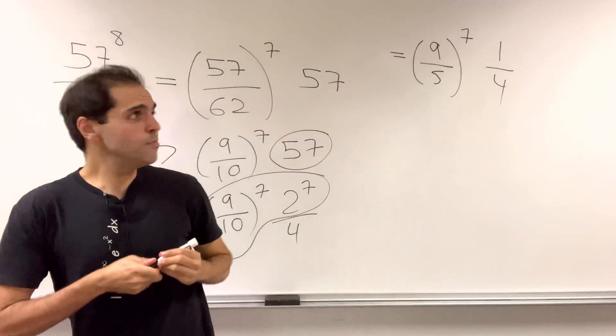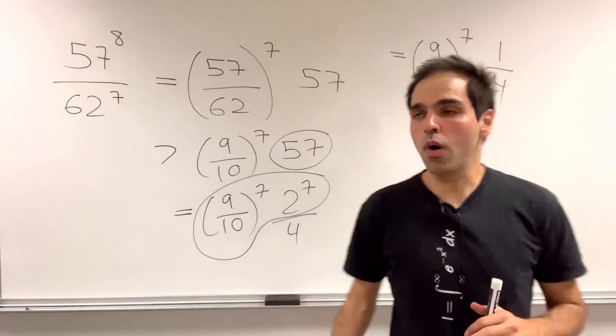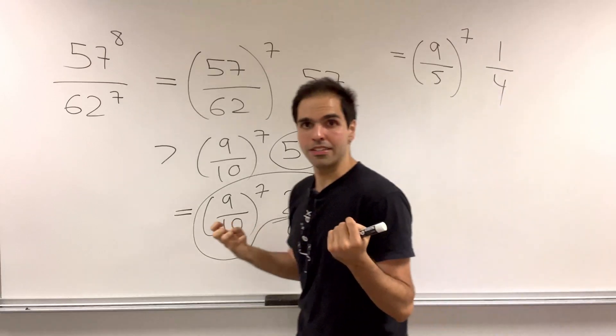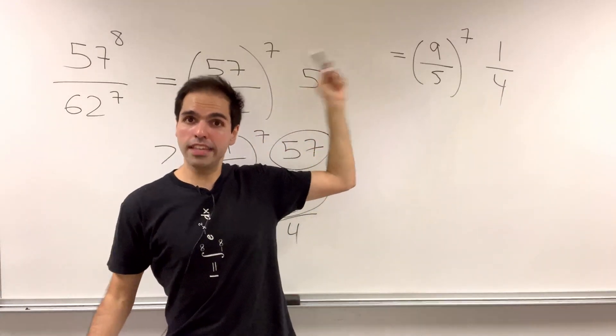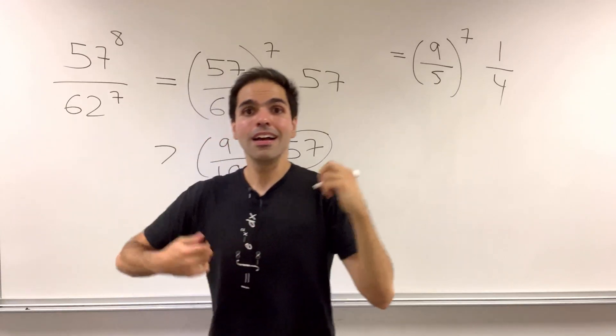Now, here's a big issue. 9 fifth is a number that is bigger than 1, which raised to the 7th power becomes a monster. And the question is, is this monster bigger than or less than 4?